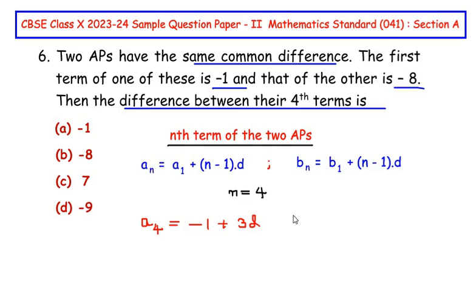Now let us find out the fourth term of the second AP. So we are going to write b_4 is equal to the first term, which is given as negative 8, plus again since n is 4, we take 4 minus 1 as 3, so 3d.